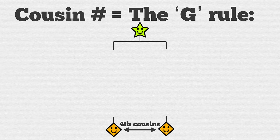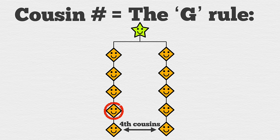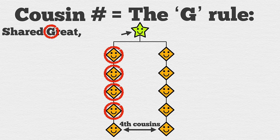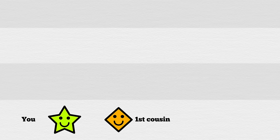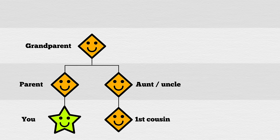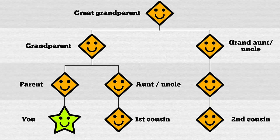Fourth cousins: four in-betweeners and a shared great-great-great-grandparent. According to the rule, your first cousins and you connect at your grandparent, and second cousins share a great-grandparent connection. Just match the cousin number with the number of Gs, and you're all set. Simple.